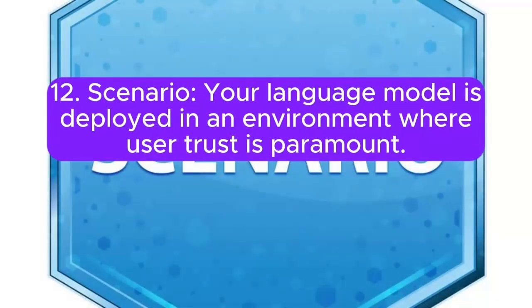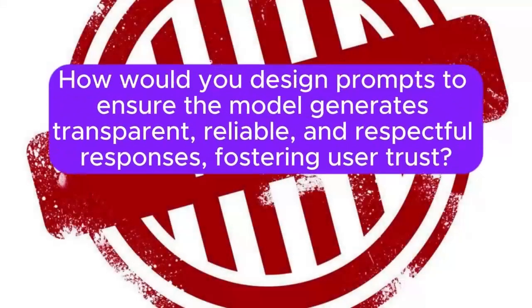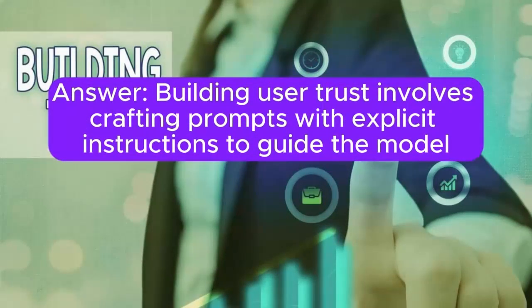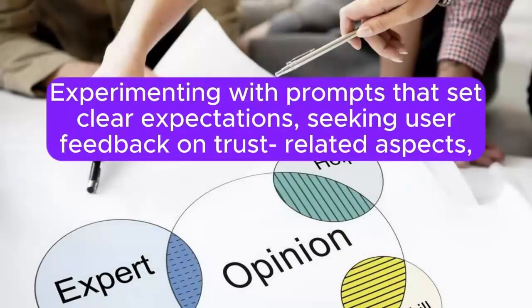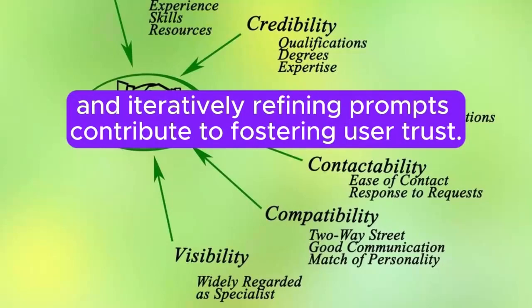Scenario 12: Your language model is deployed in an environment where user trust is paramount. How would you design prompts to ensure the model generates transparent, reliable, and respectful responses, fostering user trust? Answer: Building user trust involves crafting prompts with explicit instructions to guide the model in generating transparent, reliable, and respectful responses. Experimenting with prompts that set clear expectations, seeking user feedback on trust-related aspects, and iteratively refining prompts contribute to fostering user trust.